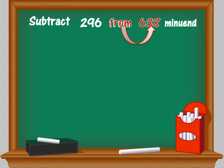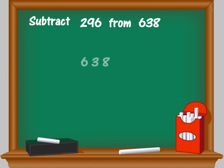So in this question, the minuend is 638. Write the minuend 638, minus the subtrahend 296. Start subtracting: in the units place, 8 minus 6 is 2. In the tens place, 3 minus 9 is not possible.